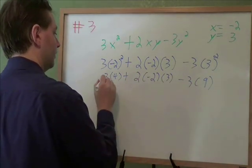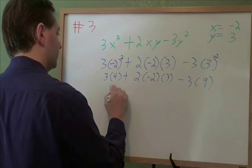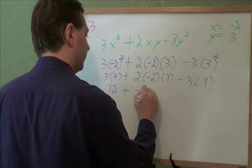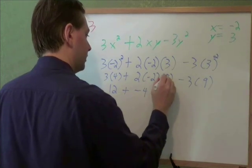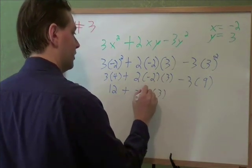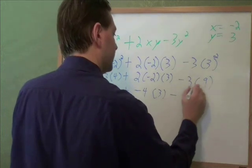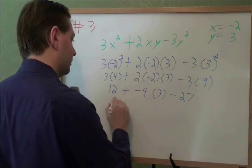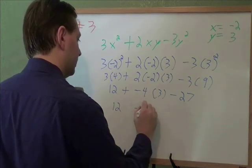Then we do the multiplying. 3 times 4, that's 12. 2 times negative 2 is negative 4. This 3 just comes straight down, we haven't done anything with it yet. 3 times 9, that's 27. We still need to do more multiplying. 4 times 3, that is 12.